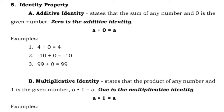Number 5, identity property. For additive identity: the sum of any number and 0 is the given number. 0 is called the additive identity, so A plus 0 equals A. Any number added to 0 is the same number. For example: 4 plus 0 equals 4; negative 10 plus 0 equals negative 10; and 99 plus 0 equals 99.